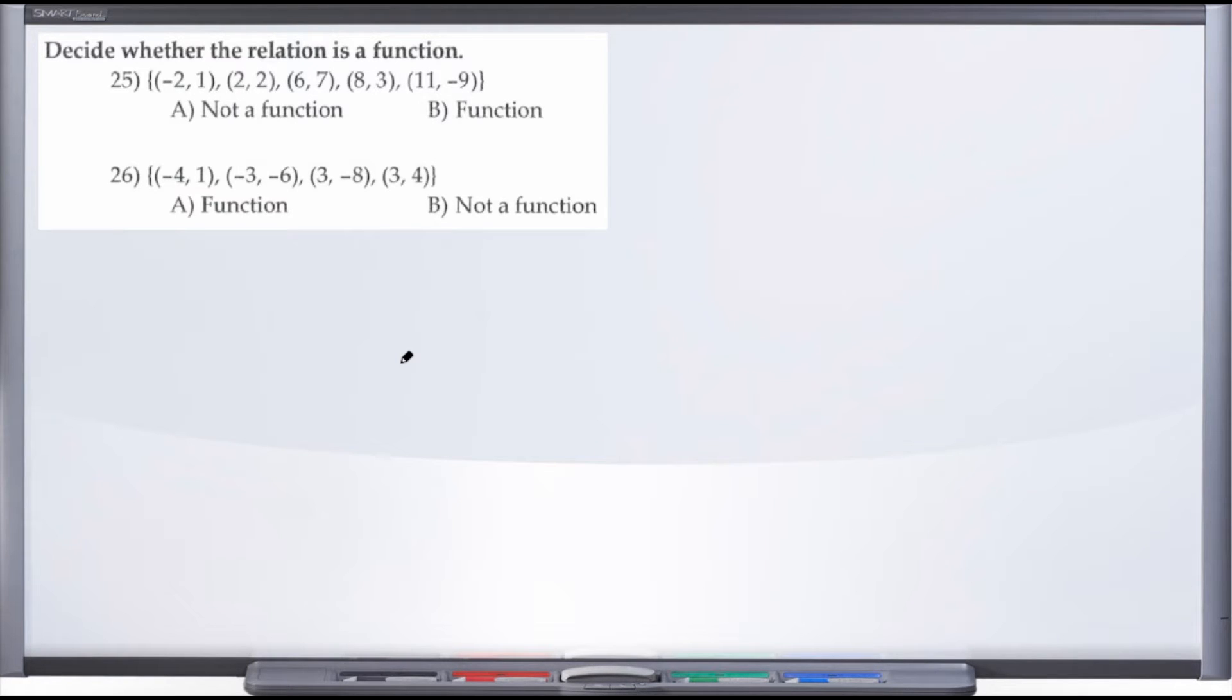All right, so as we take a look at number 25 and 26, the directions are to decide whether the relation is a function. These are nice and simple - they don't really require any work. All we're doing here is deciding whether the set of ordered pairs they give us creates a function if we were to graph these on a grid, or whether or not these are not a function.